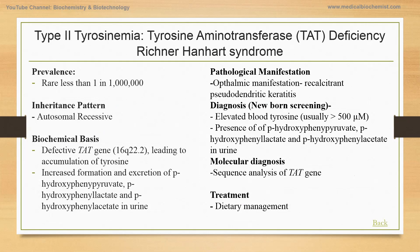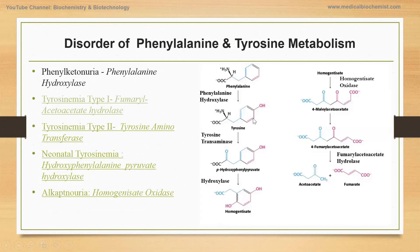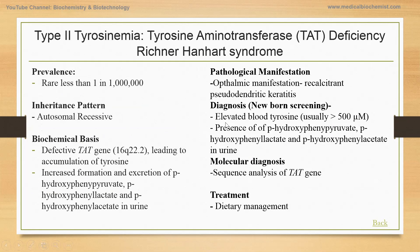Next is type 2 tyrosinemia, also known as Richner-Hanhart syndrome. It is caused by the deficiency of the enzyme tyrosine aminotransferase — the second step of phenylalanine metabolism and the first step of tyrosine metabolism, where tyrosine transaminase undergoes transamination to form parahydroxyphenylpyruvate. This is a rare disorder with 1 in 1 million cases worldwide, inherited in an autosomal recessive manner.